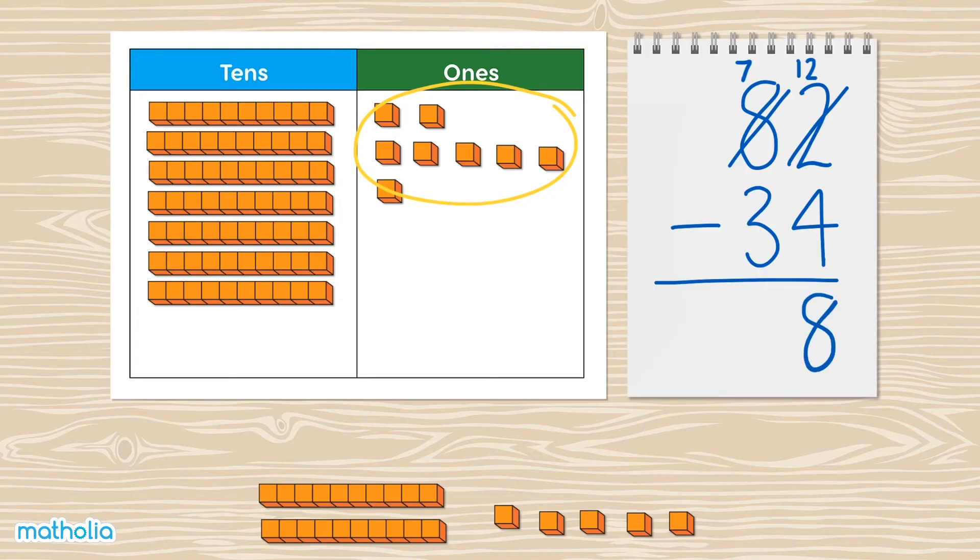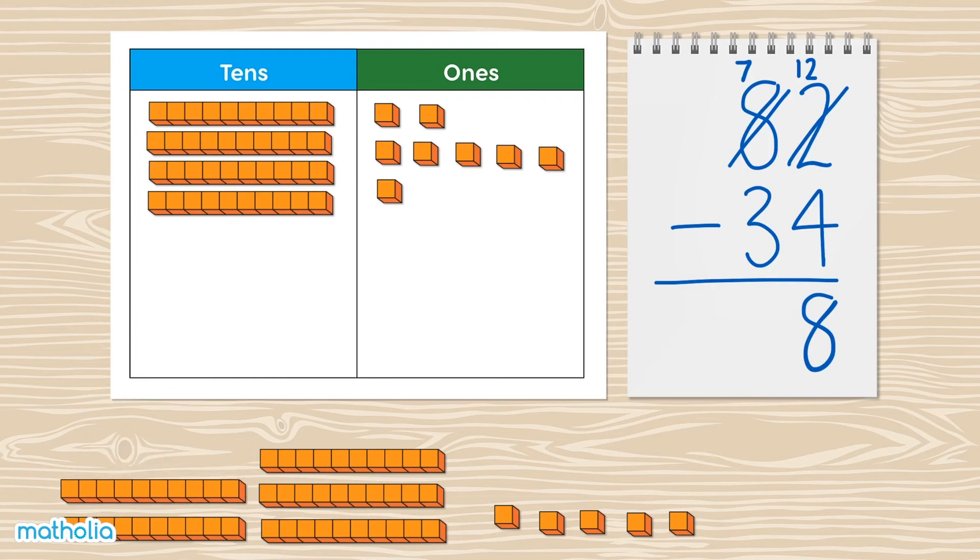eight in the ones column. Now we subtract the tens. There are four tens remaining. Write four in the tens